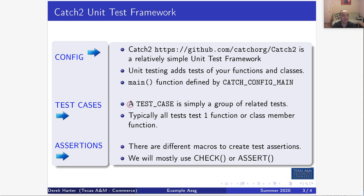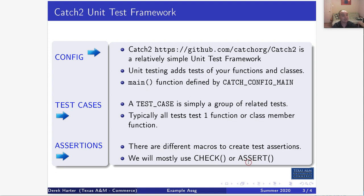The way I write a unit test is using test cases — a test case is just a group of related tests. Typically all the tests in a case test a single function, although for more complex functions you might have multiple test cases testing different aspects. Each individual test is really just an assertion: basically something like 'check that this is true' — so after I call your function and get a return value, check that the return value equals what I'm expecting.